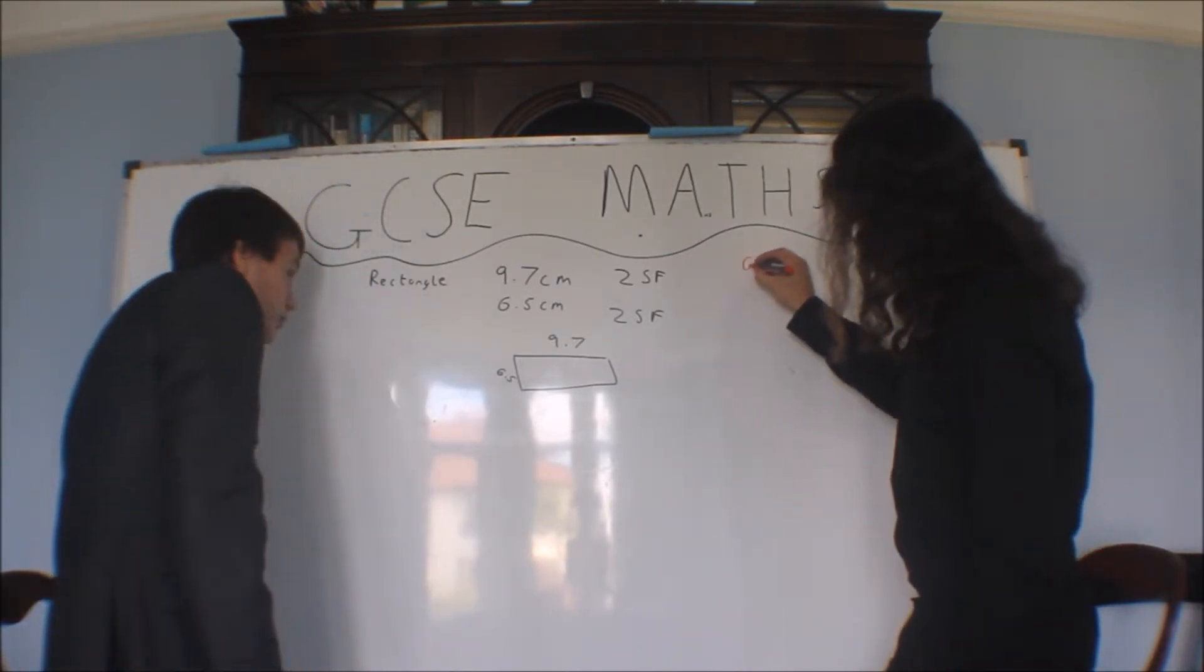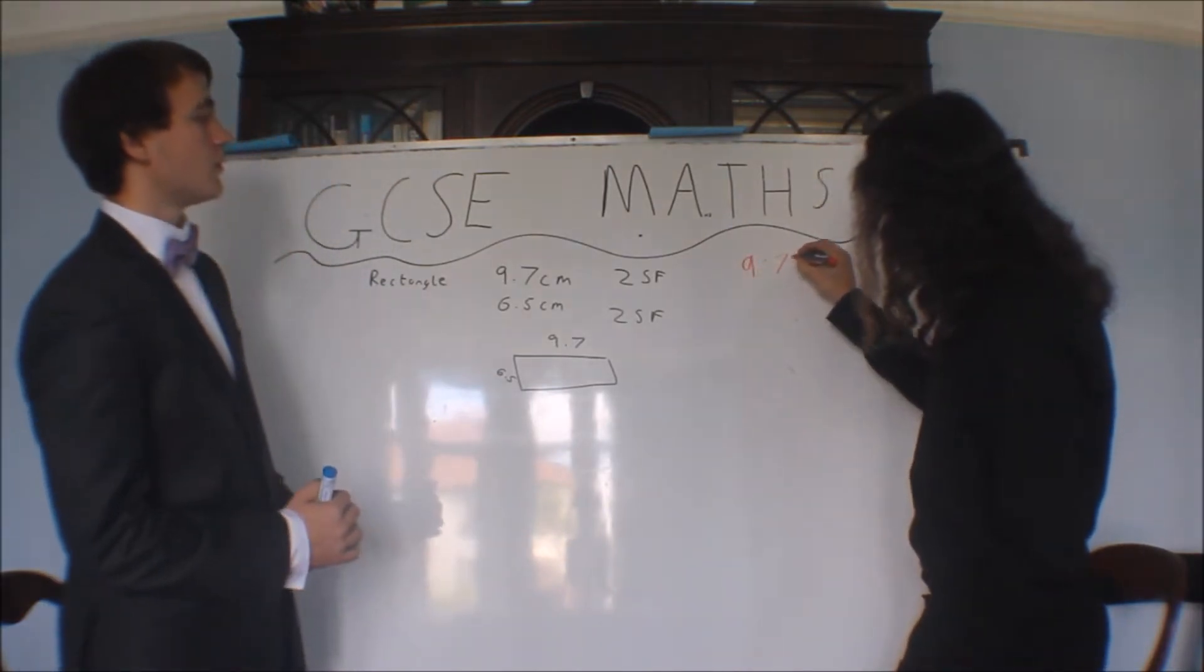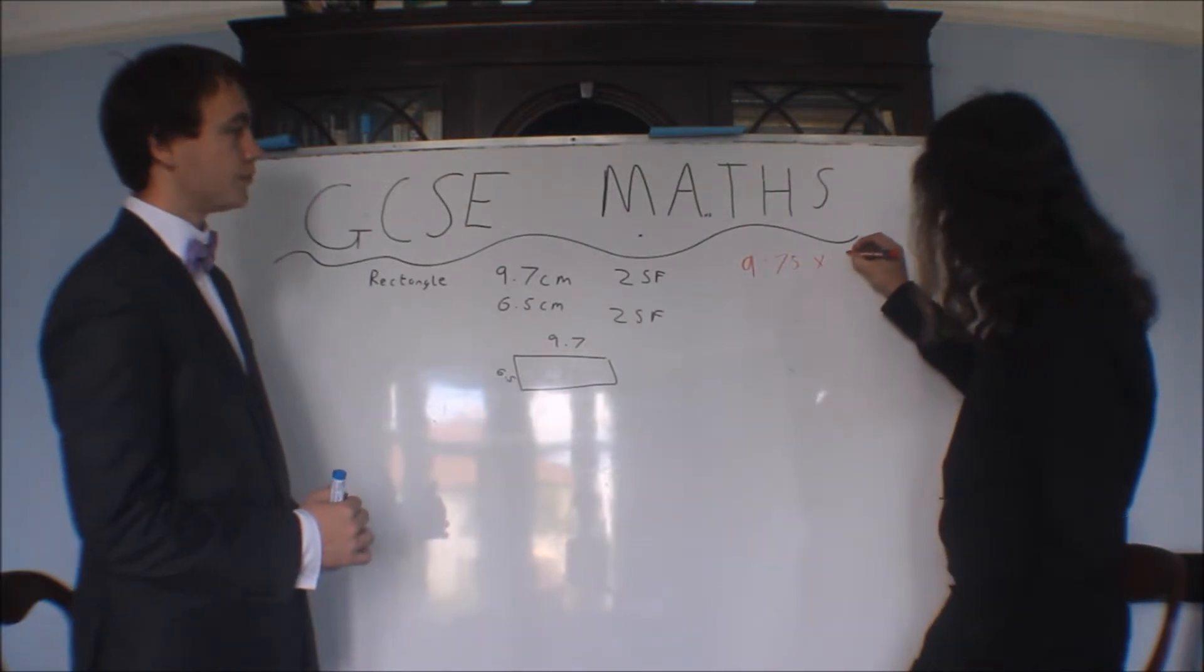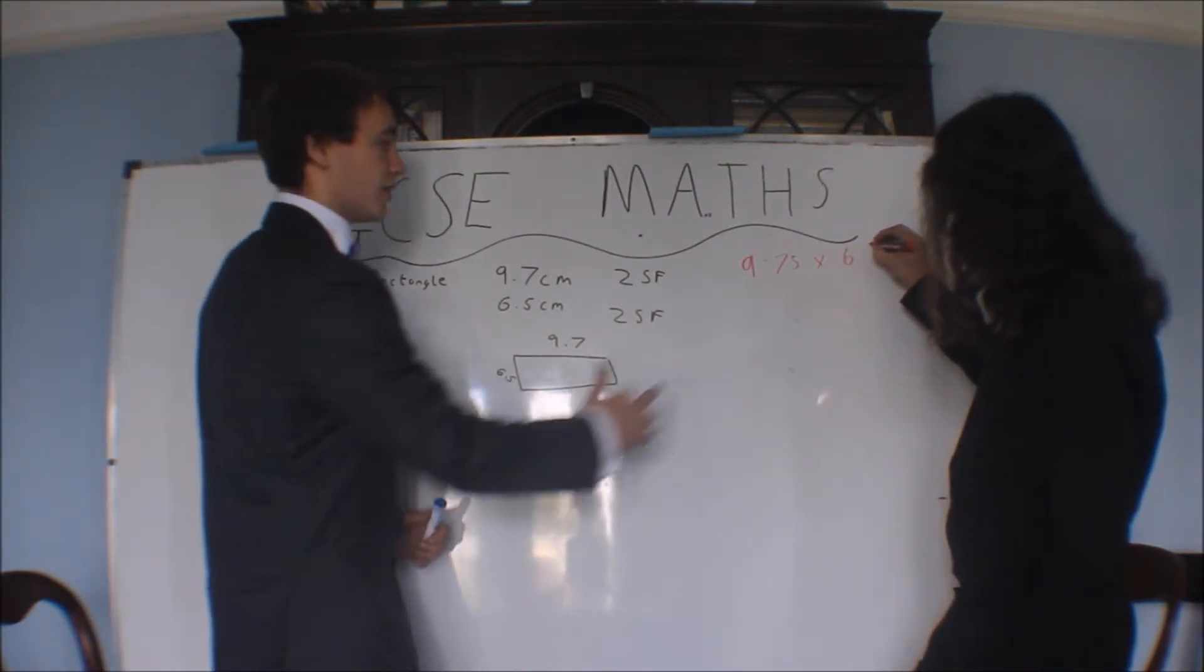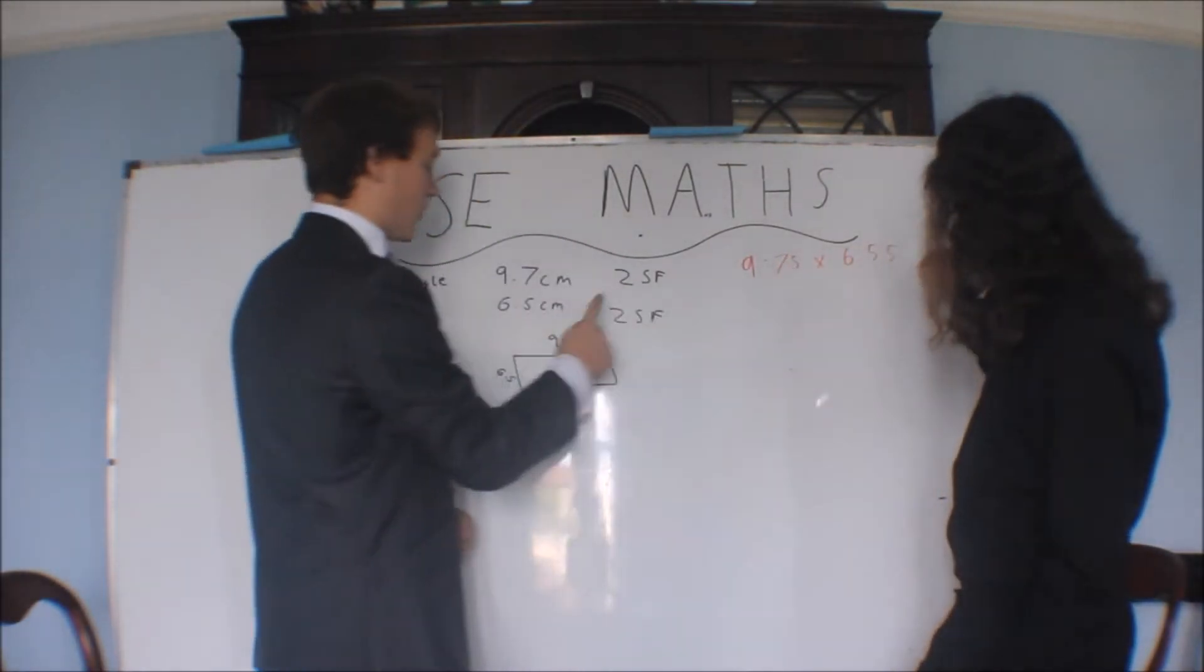So we have two sums to do. We have 9.75 times 6.55. And that would be the upper one, because that's as high as each of these could have been to round down to this.